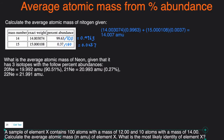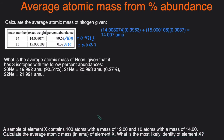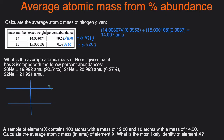Let's take a look at another example. This question asks: what is the average atomic mass of neon given that it has three isotopes with the following percent abundances? We have neon-20 with its mass and percent abundance, neon-21 with its exact mass and abundance, and neon-22 with its mass but we're not given the abundance. Let's rewrite this in a table showing the exact mass and percent abundance.